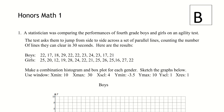Let's move on to Part B. A statistician was comparing the performance of fourth grade boys and girls on an agility test. The test asked them to jump from side to side across a set of parallel lines, counting the number of lines they clear in 30 seconds. Here are the results — there are two sets of data, one for boys and one for girls.